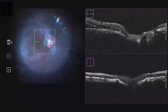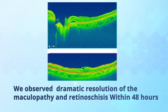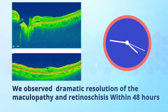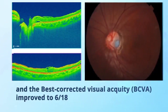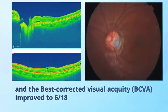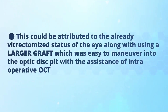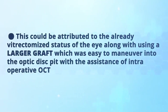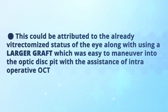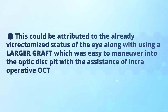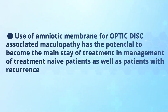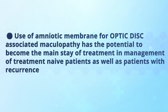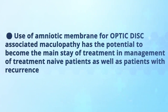To our surprise, we observed dramatic resolution of the maculopathy and retinoschisis within 48 hours, and the best corrected visual acuity improved to 6/18. This could be attributed to the already vitrectomized status of the eye, along with using a larger graft which was easy to maneuver into the optic disc pit with the assistance of intraoperative OCT. This treatment modality is new and has the potential to become the mainstay of treatment in naive as well as in patients presenting with recurrence.